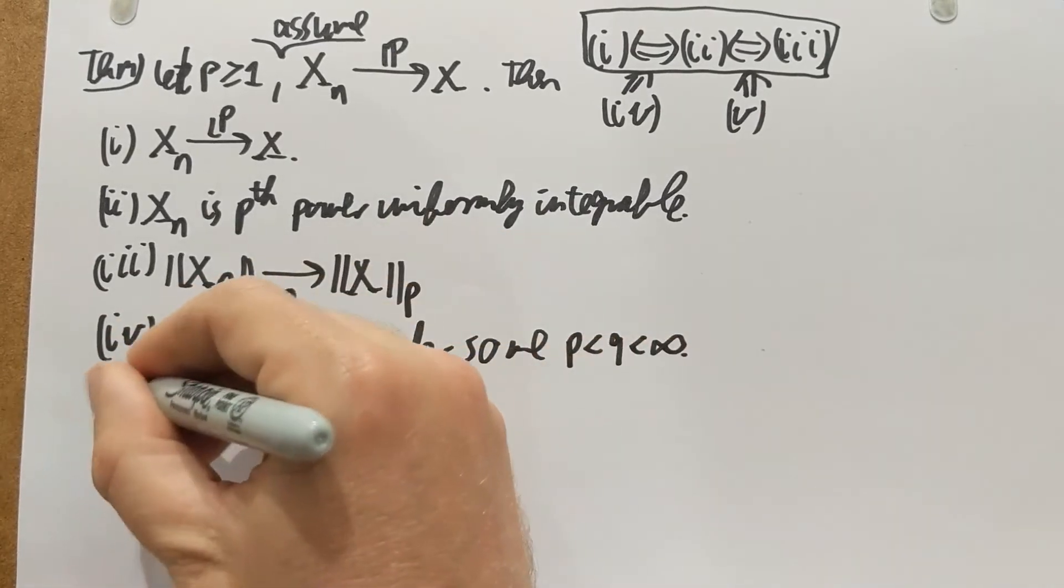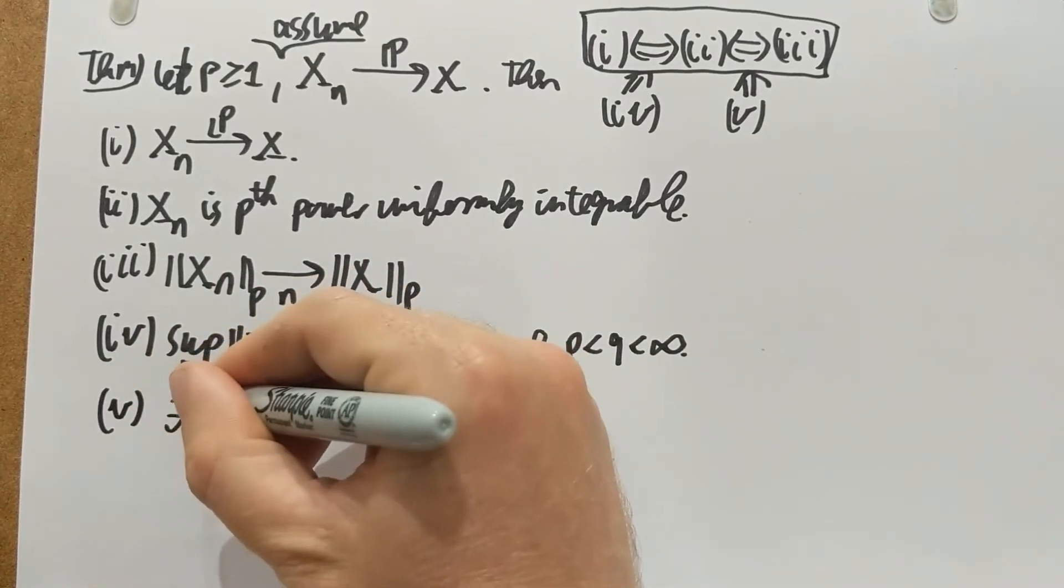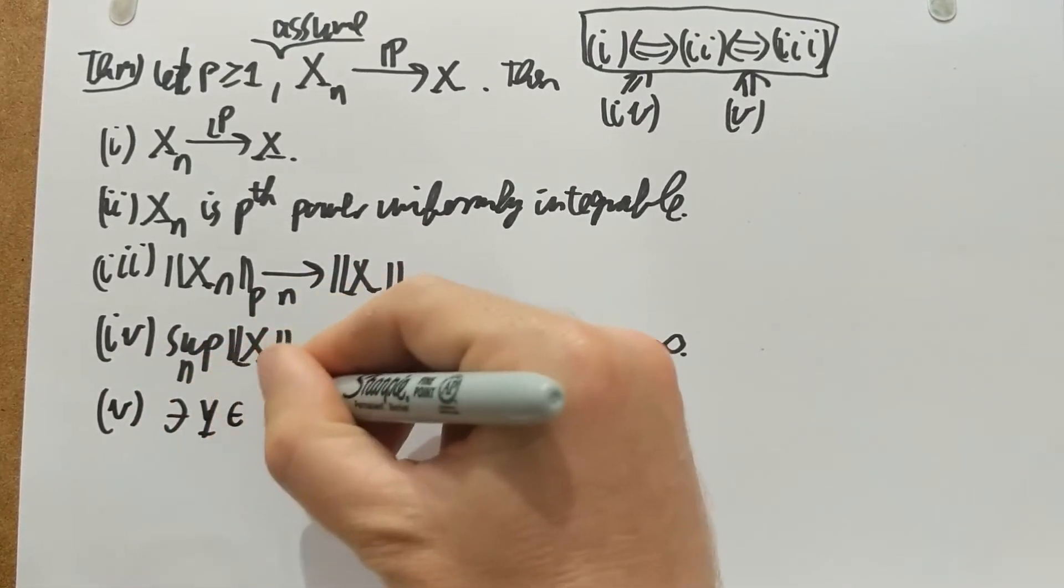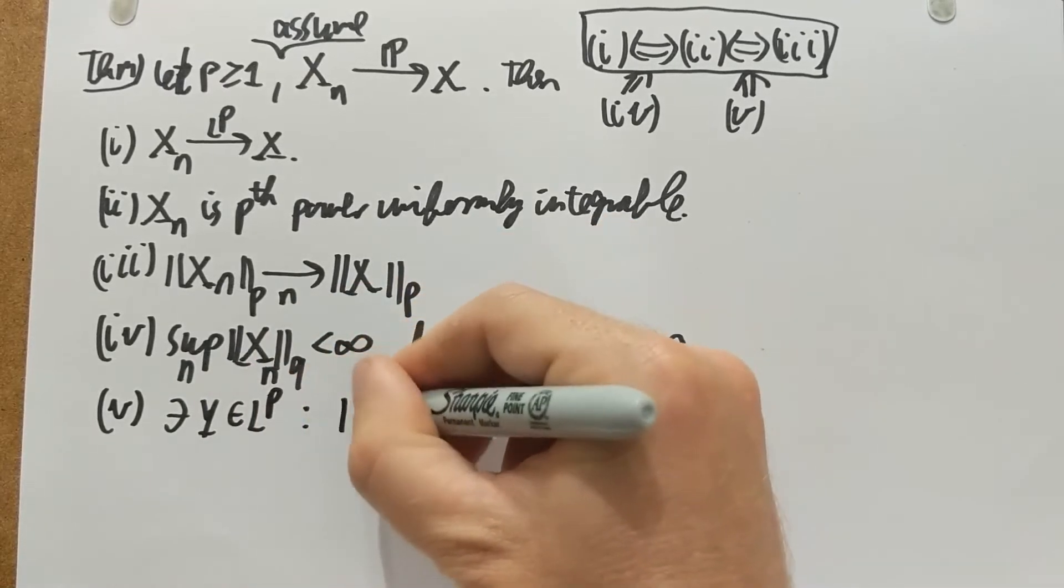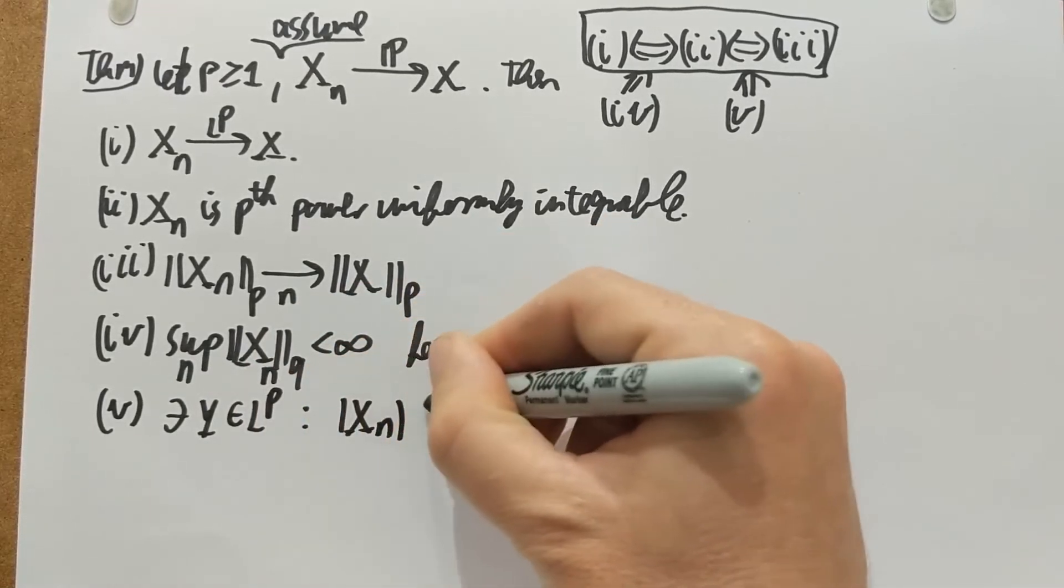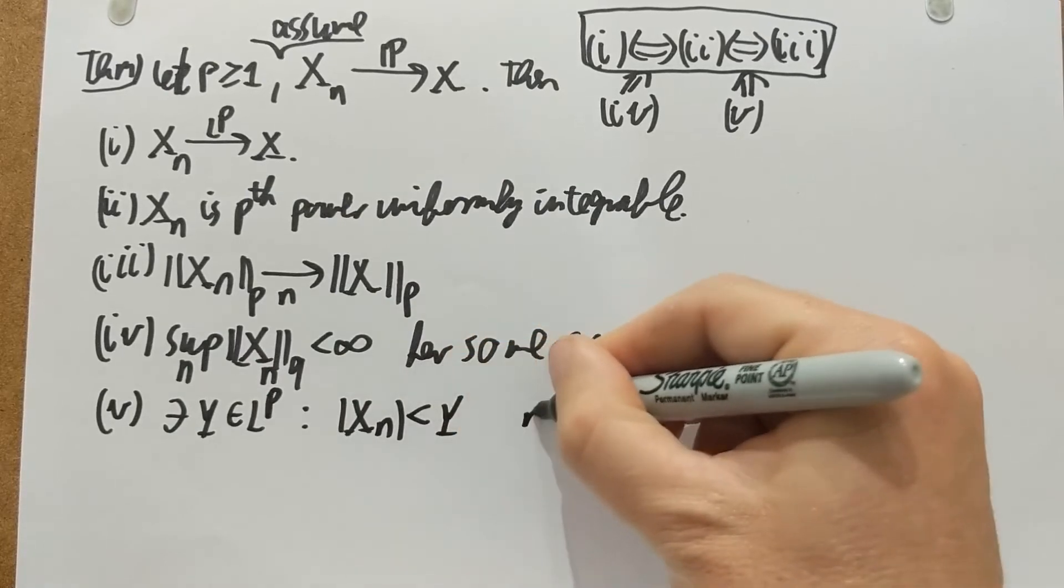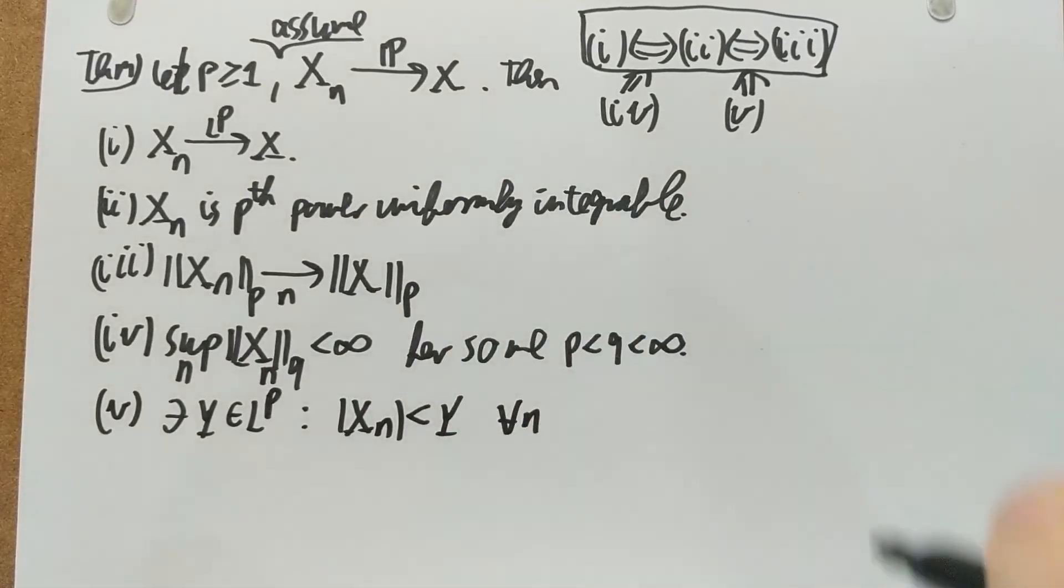And then number five is that there exists a bounded variable, a bounding variable in lp itself, so a random variable that bounds all of the xn's in absolute value.